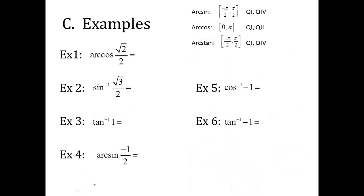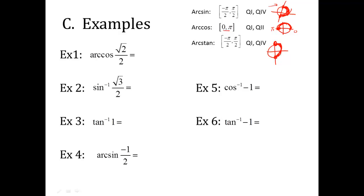Here are the restrictions: arc sine's range goes from negative pi over 2 to pi over 2, so answers can only come from quadrant 1 or quadrant 4. Arc cosine goes from 0 to pi, so answers come from quadrants 1 and 2. Arc tangent also goes from negative pi over 2 to pi over 2, so answers also come from quadrants 1 and 4 — same restriction as arc sine.